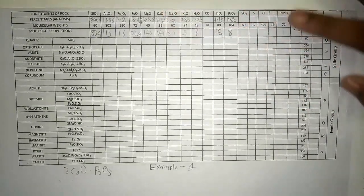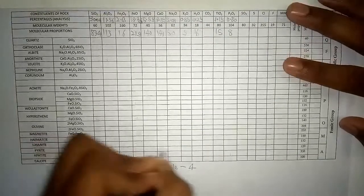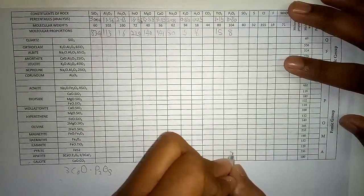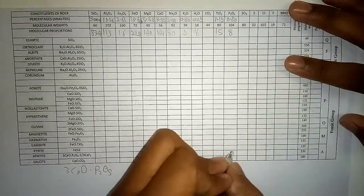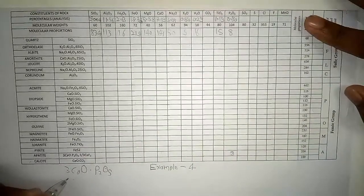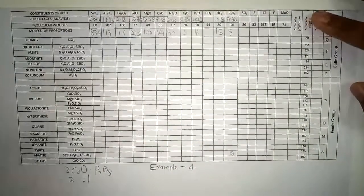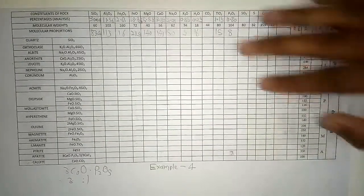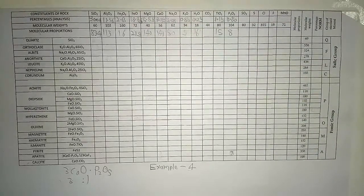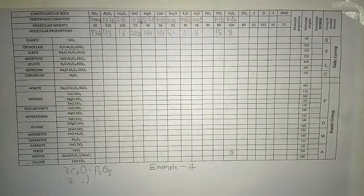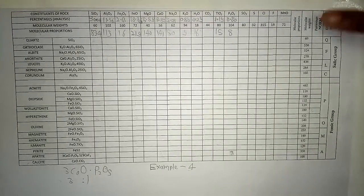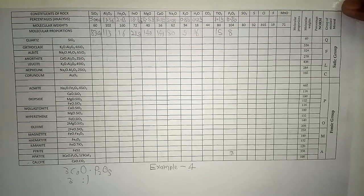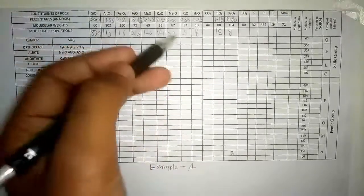The formula of apatite is 3CaO·P2O5. We have 8 P2O5 and CaO is 141, so we can make it. The ratio is 3:1, so 8 into 3 gives 24 CaO used, and 8 into 324 for apatite. For details about these ratios and molecular proportions please watch Parts 1, 2, and 3.